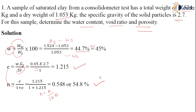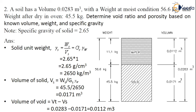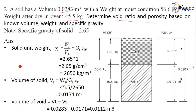This is one type of problem which may be given in the examination. Coming to the next variety of problem: a soil has a volume of 0.0283 m³, a moist weight of 56.6 kg, and an oven-dried weight of 45.5 kg. We have to determine the void ratio and porosity based on volume-weight relationships. The specific gravity of solids is given as 2.65.